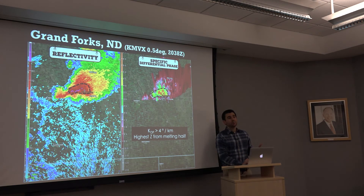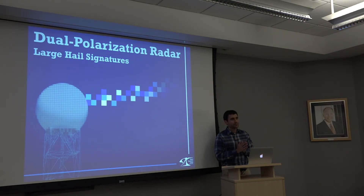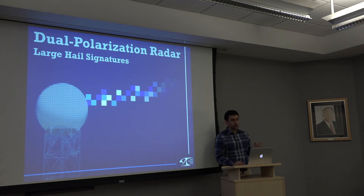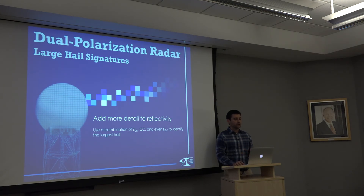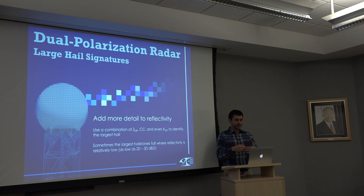What we can gauge from this is that the highest reflectivity isn't necessarily indicative of hailstone size — it may just reflect a lot of melting hail. The area with low ZDR and reduced correlation coefficient is actually where the really large hailstones are falling. Combining dual-pol variables — differential reflectivity, correlation coefficient, and KDP — lets you add detail to reflectivity and identify where the largest hail is likely falling within a thunderstorm, sometimes where reflectivity is as low as 20–30 dBZ, particularly along the reflectivity gradient in the inflow region.